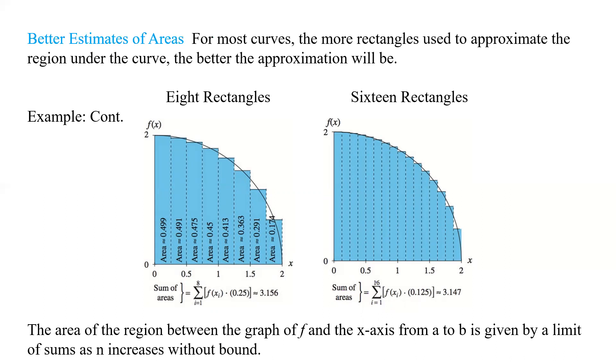We're going to start getting smaller and smaller, and we're going to get closer and closer to the actual value for that square root of the 4 minus x squared. So, the more rectangles you use, the better your approximation to the curve is going to be.